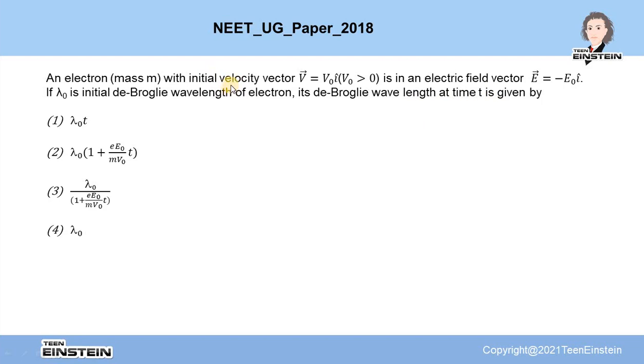Here is an electron which is moving with some initial velocity along x direction, in a region where there is an electric field which is in the negative x direction. This electron will be accelerated by this electric field. Therefore, after time t, this electron will not have the same velocity v0. It will have some velocity which we have to first calculate, and because of that, it will have different wavelength.